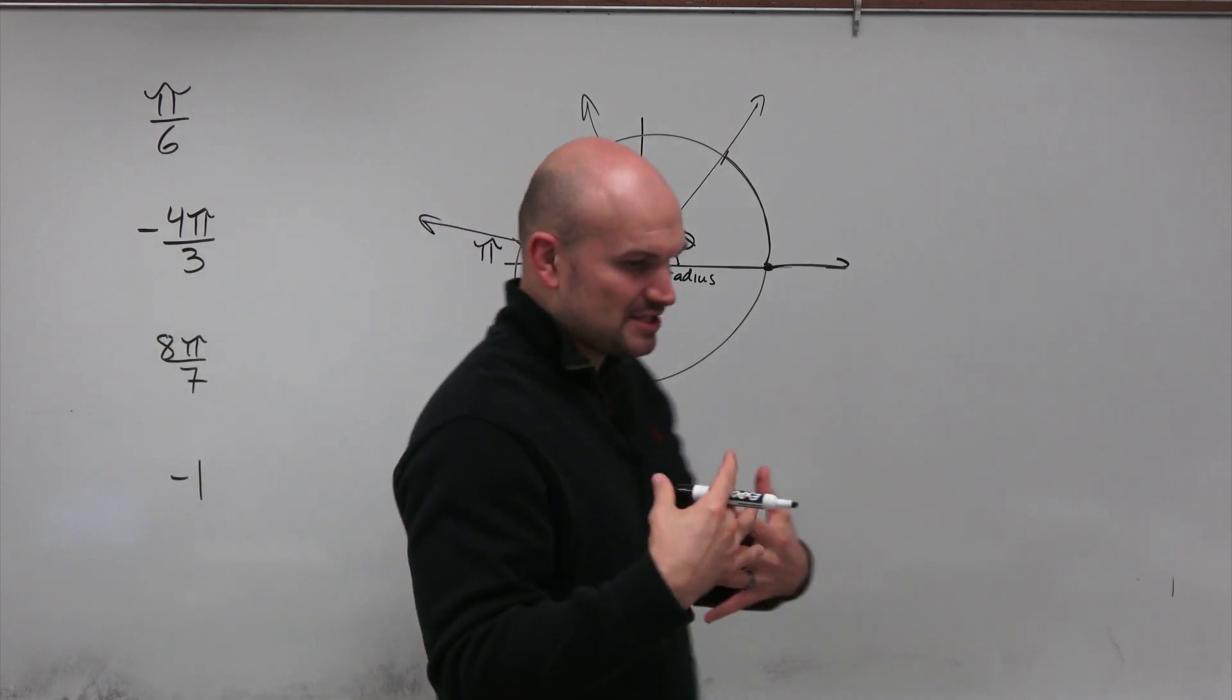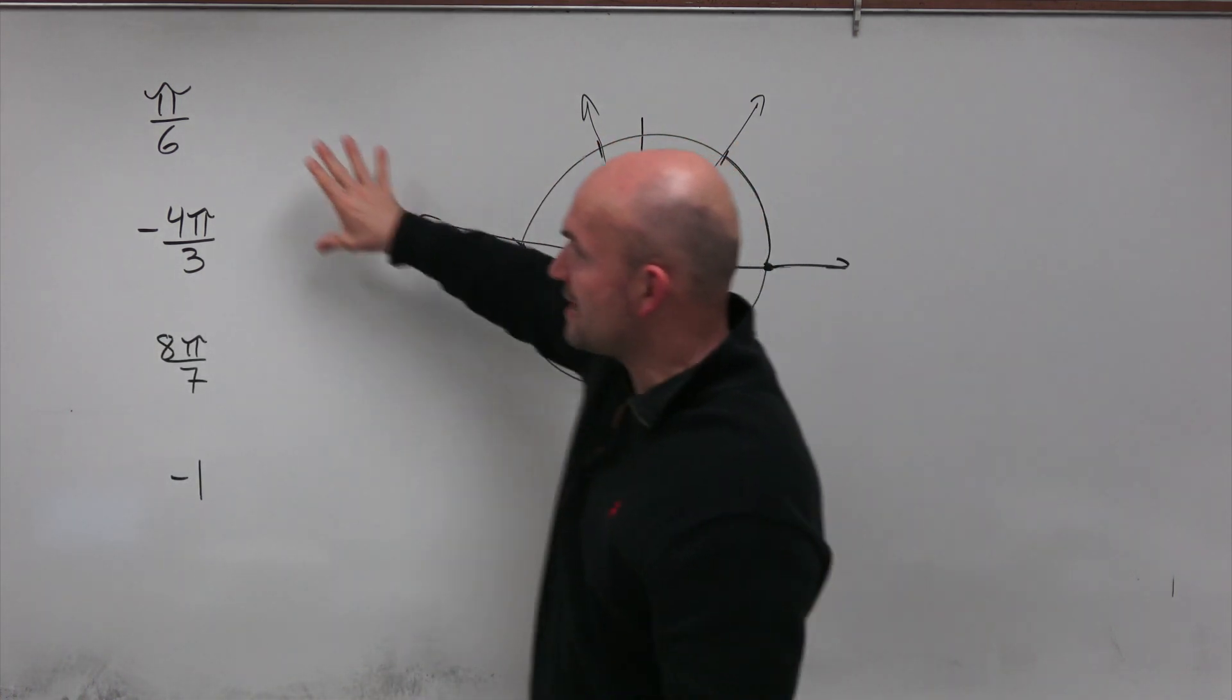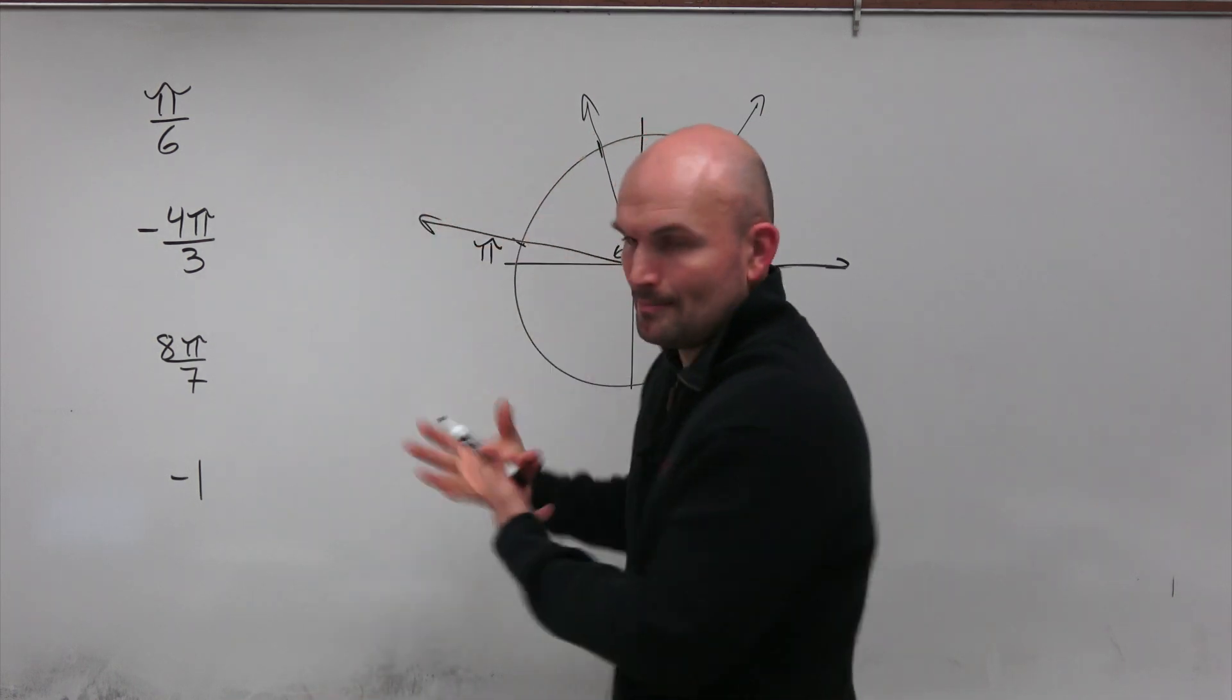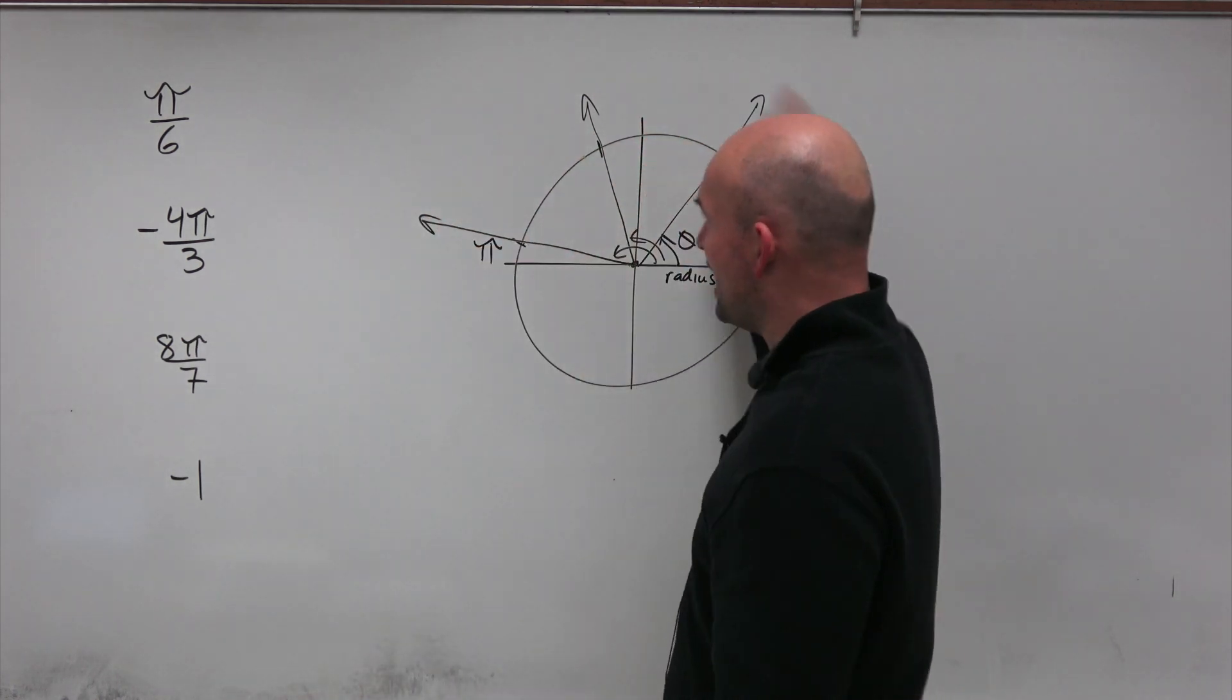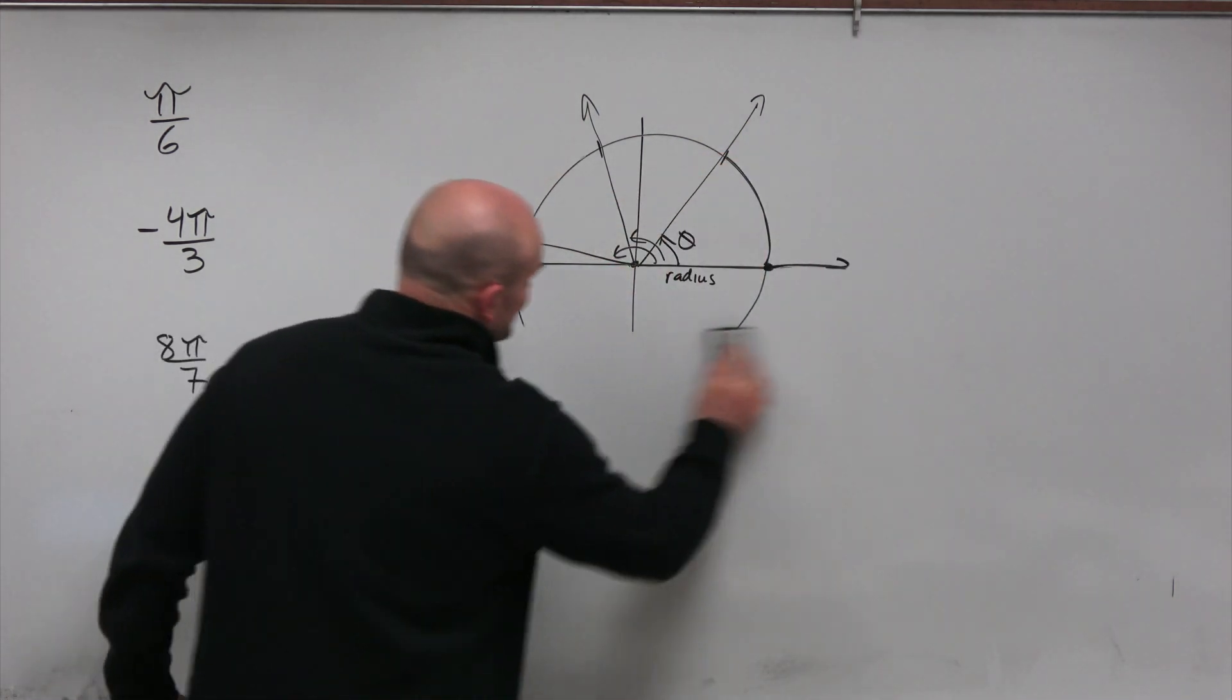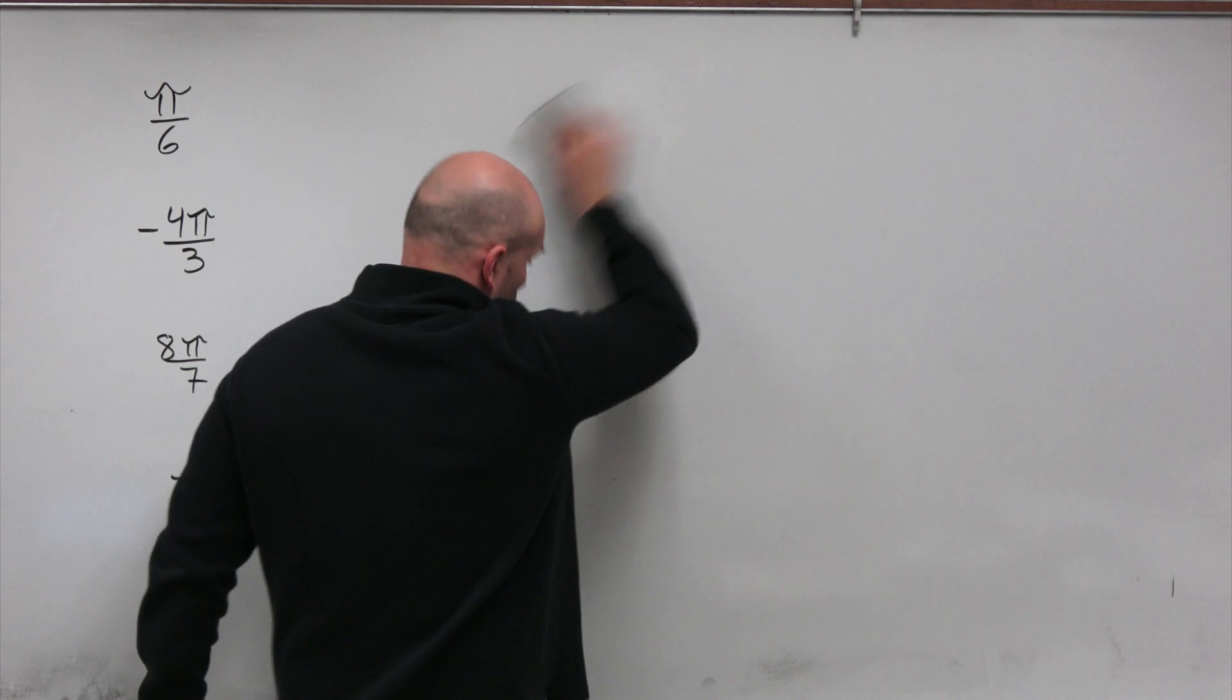Now, this is very important for us to understand here. Because if we're going to graph our radians in standard form, we need to understand pi, right? And we understand that pi is halfway around the circle. So let's get into graphing our angles here.